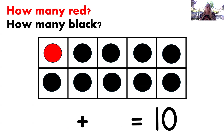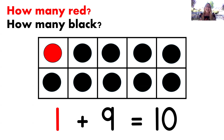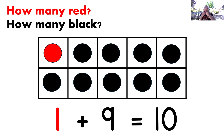How many dots are red? You got it, one. And how many dots are black? That's right, nine. Now let's read the equation: one plus nine equals 10. Beautiful.